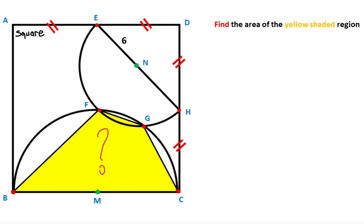First step: note that if the radius is 6, that means this length is also 6, because of the radius. So you know that here is 45 degrees, because triangle EDH is an isosceles right triangle. So here is also 45 degrees.